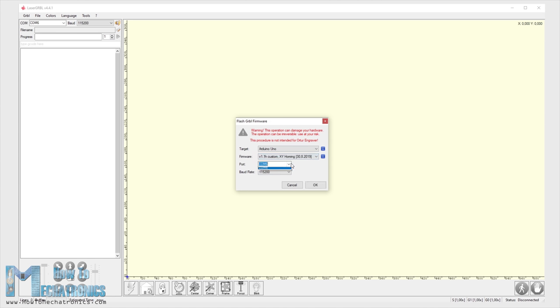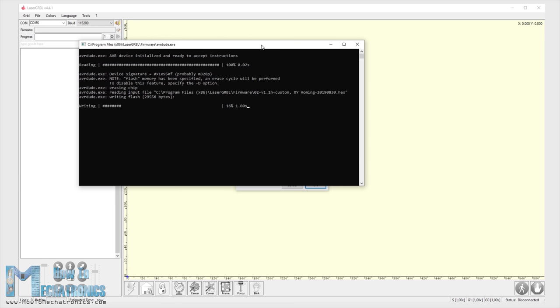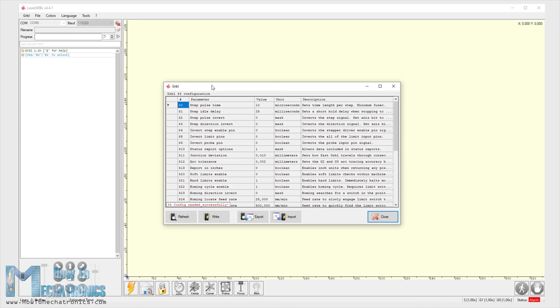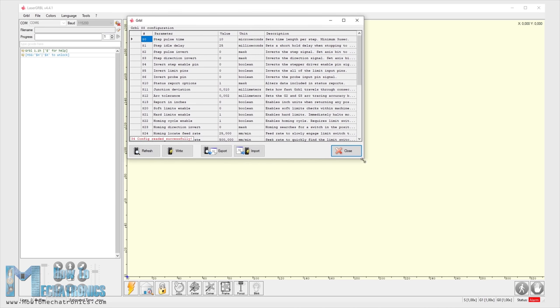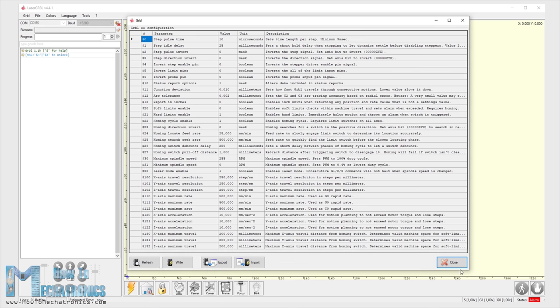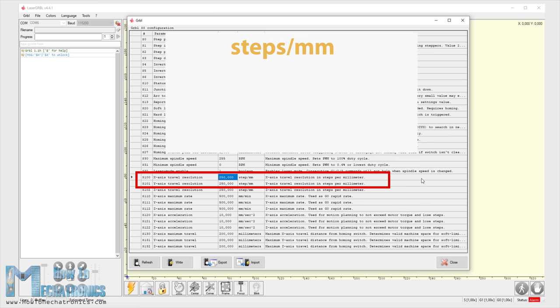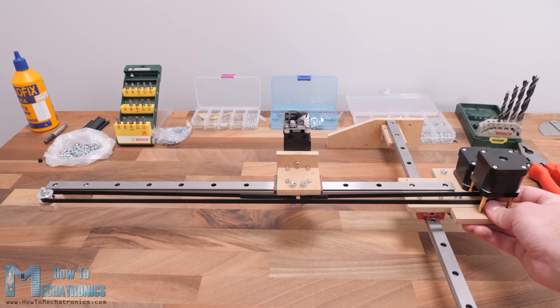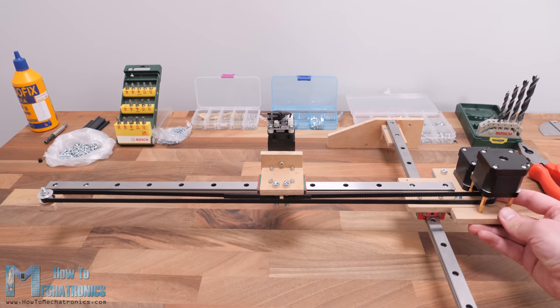We can even choose a ready to use version for two axis machines with just X and Y homing just like the one we need. So once we flash our Arduino with the GRBL firmware we can connect our machine to the controller and open the GRBL configuration window so we can adjust some parameters according to our machine. The first thing that we should adjust here is the travel resolution or the steps per millimeter values for the X and Y axis. These values indicate how many steps the motor should take in order to move one millimeter. This depends on the type of the stepper motor that we have, the selected step resolution and the motion transmission, in this case the GT2 belts and the pulley.